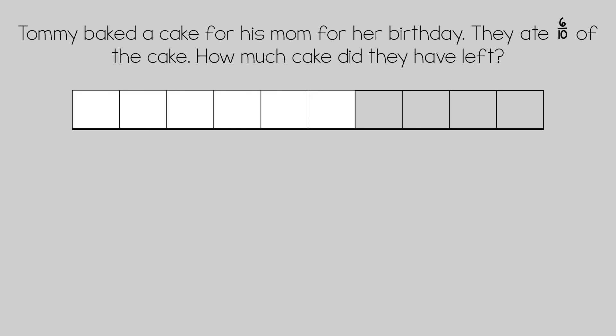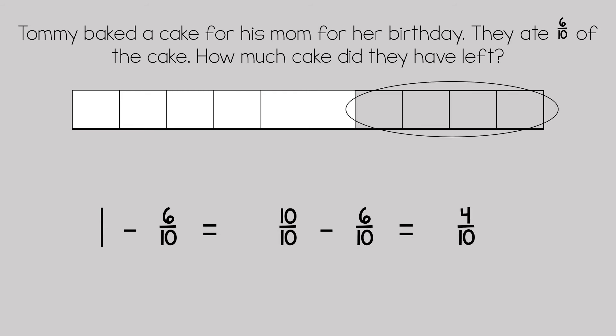We know ten-tenths is the whole. They ate six-tenths of it, so one minus six-tenths. We turn that one whole into ten-tenths so that we can subtract ten-tenths minus six-tenths, and that equals four-tenths as represented in our bar model and mathematically.